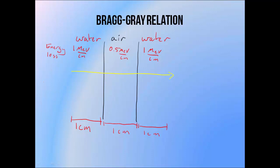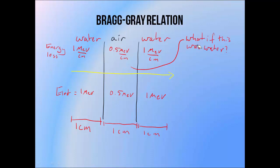An electron that travels 1 centimetre through the water above the chamber, and loses energy at a rate of 1 MeV per centimetre, will lose 1 MeV. An electron travelling 1 centimetre through the chamber, that loses energy at a rate of 0.5 MeV per centimetre, will lose 0.5 MeV. And it will lose another MeV in the water on the other side of the chamber. The Bragg-Gray theory uses this information to answer the question: what if the region of air inside the ion chamber was made of water instead? Well, we know the rate of energy lost per centimetre in water is 1 MeV per centimetre, so the electron would lose twice as much energy as it travelled that centimetre through the ion chamber. And the amount of energy deposited would be 1 MeV instead of 0.5 MeV. This is essentially all the Bragg-Gray theory does.